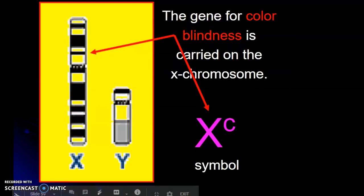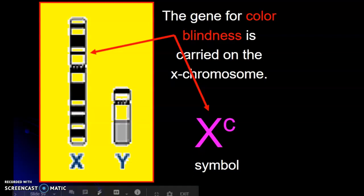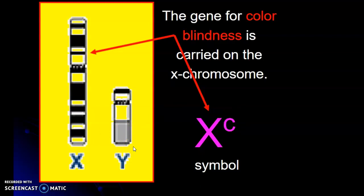The colorblindness gene is carried on the X chromosome. And we're going to use the symbol XC. So we're going to actually label the X chromosome. The Y will never be labeled. The Y is just the Y. The Y does not have any genes for colorblindness. It doesn't have any genes for hemophilia or blood clotting. So it's just Y. We're never putting anything on the Y, just on the X if it has that particular trait of interest.